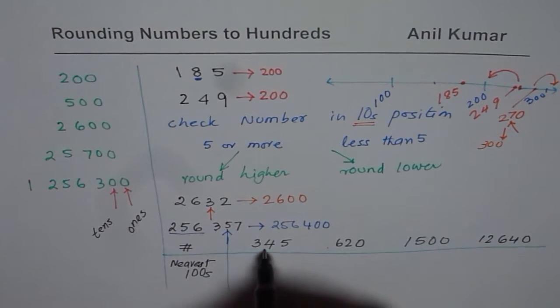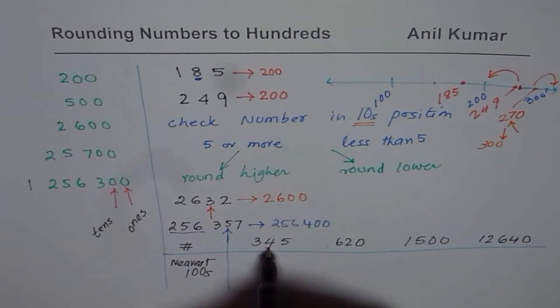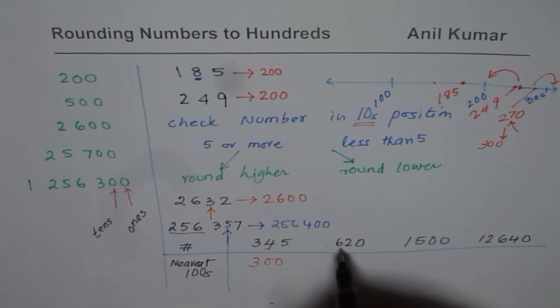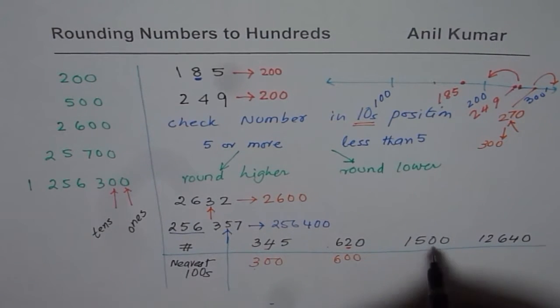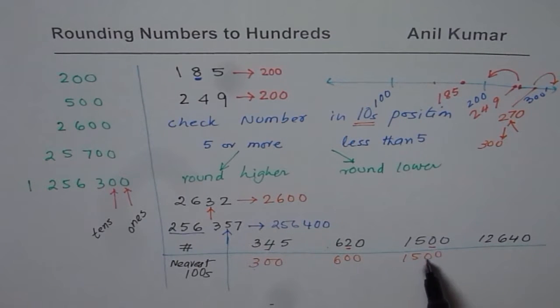345, tens place is 4, less than 5. Therefore this rounds to lower, 300. 620, tens position is lower than 5, rounds lower, 600. 1,500, this is zero. Rounds lower, 1,500. So what you notice here is that the number remains same.